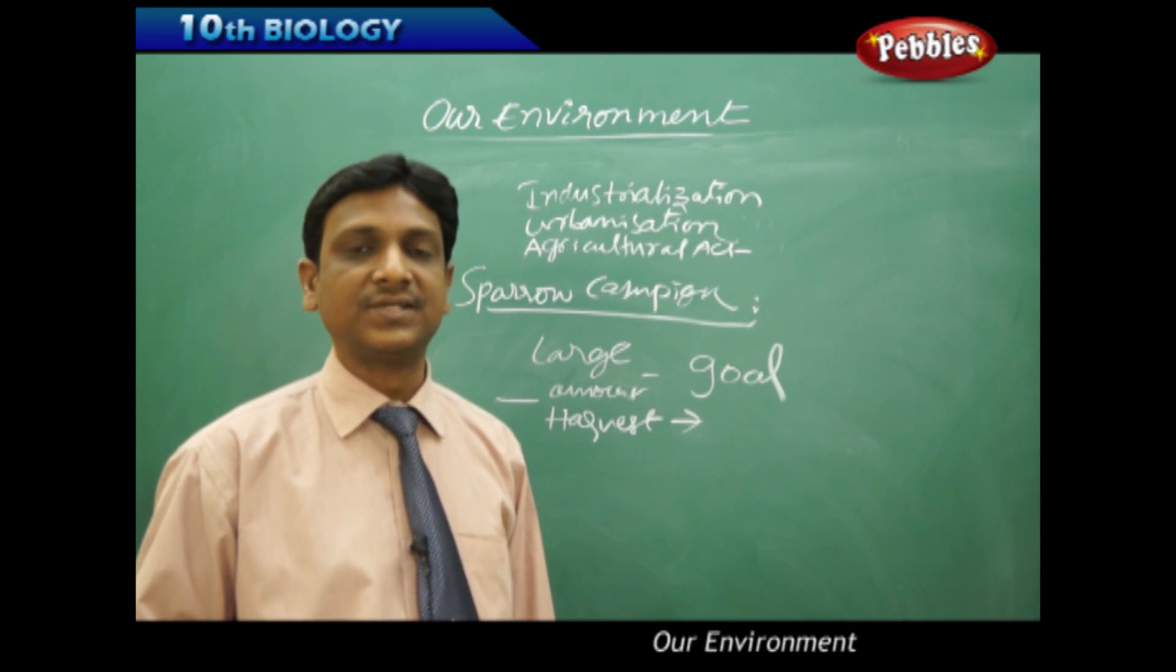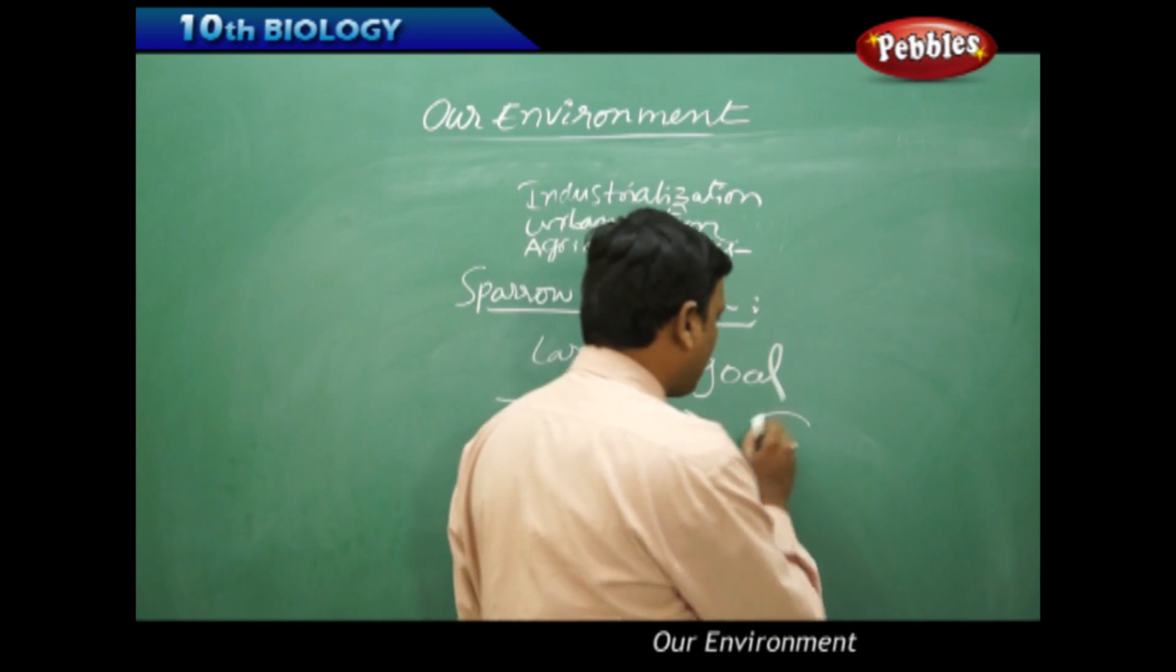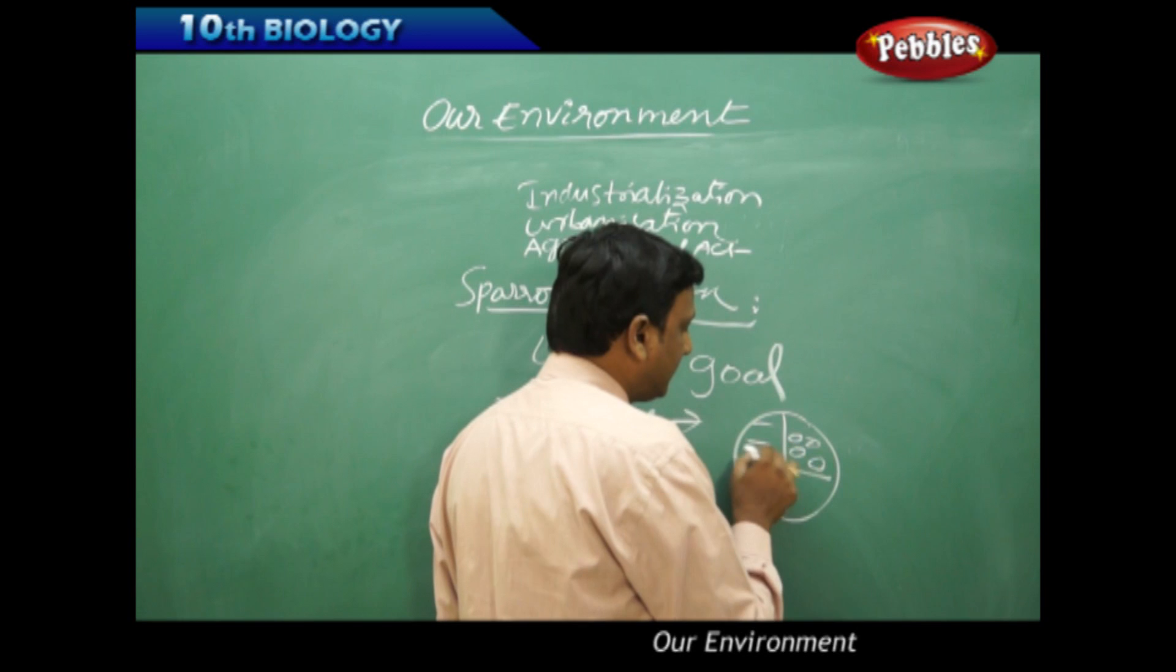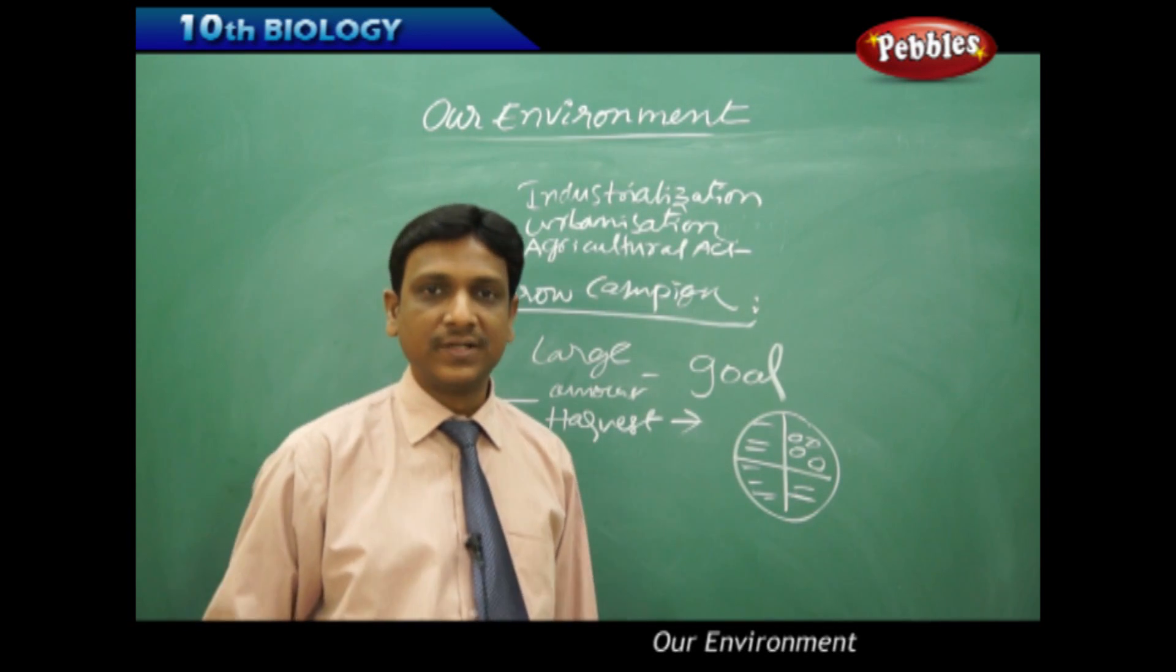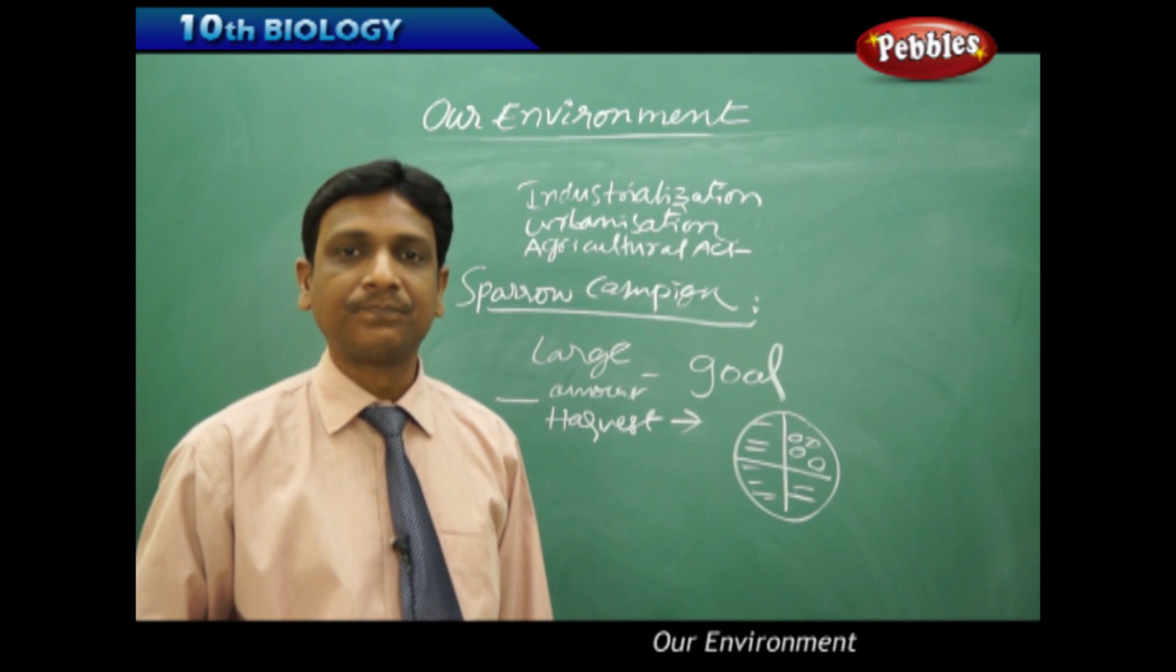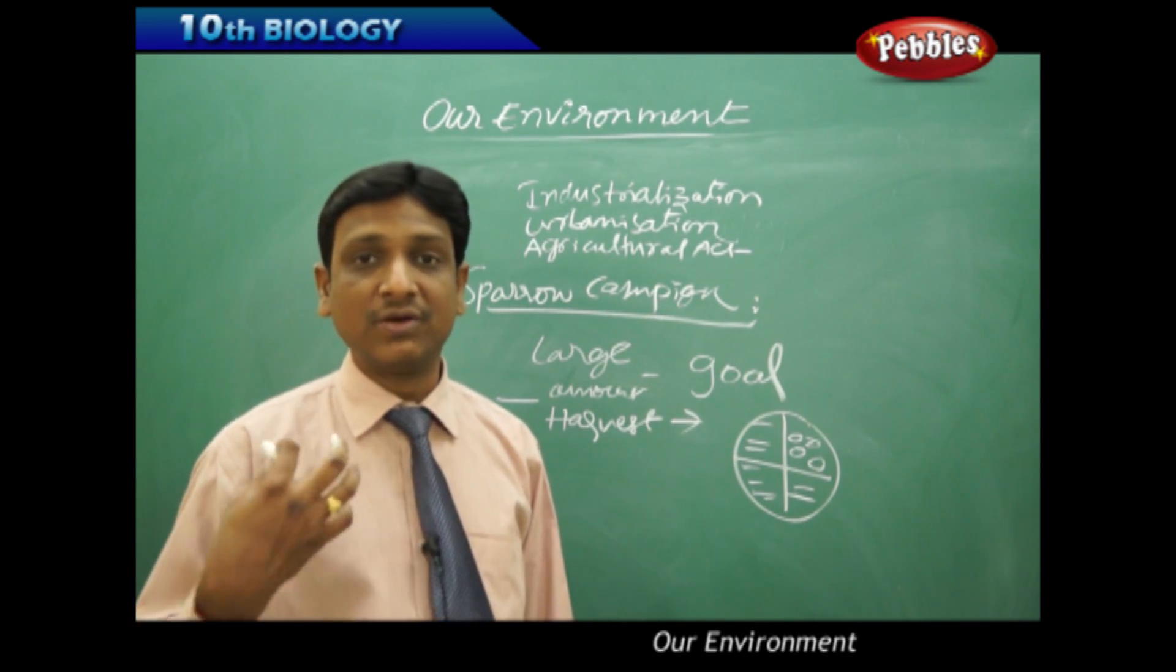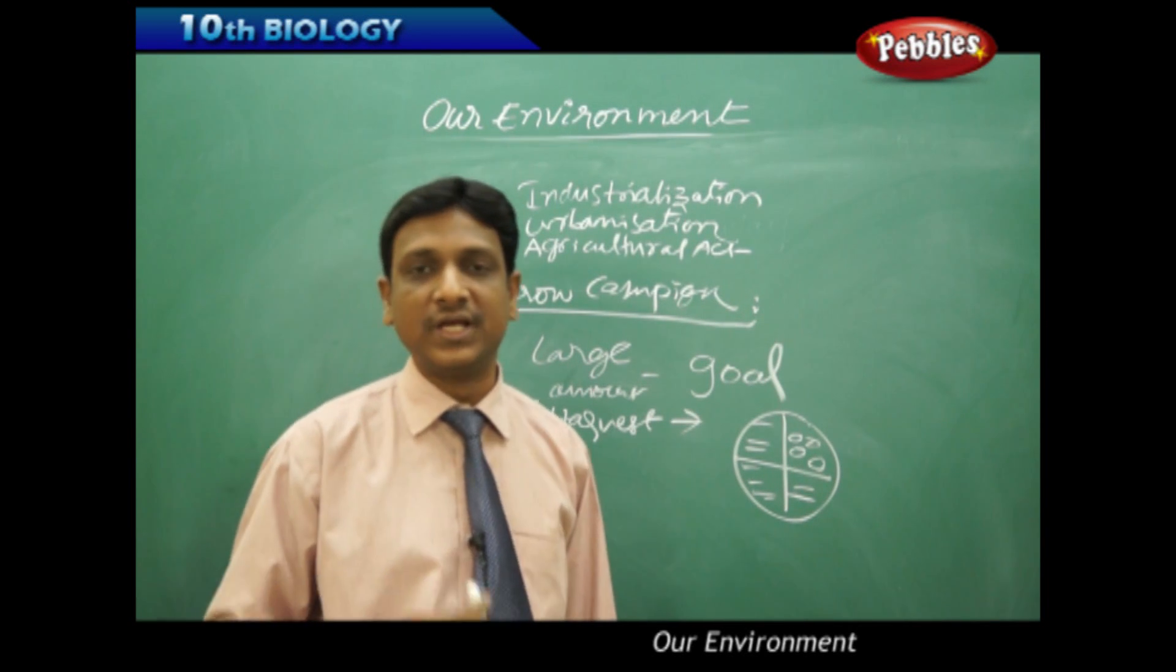Later, some scientists dissected the sparrow and observed the digestive system. The digestive system of the sparrow contains only one fourth of grains and remaining three fourths contains the insects which harm the crops. That means it is a friendly bird. The reason is not the sparrows. It is because of the human blame that the sparrow population was greatly damaged and reduced in China.